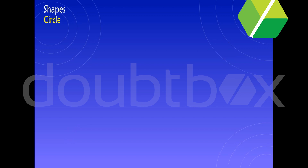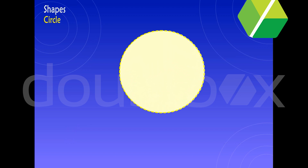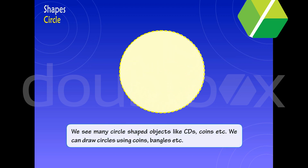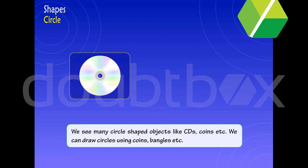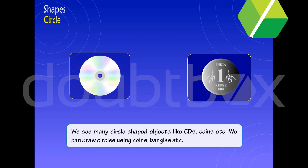Circle. We see many circle-shaped objects, like CDs, coins, etc. We can draw circles using coins, bangles, etc.